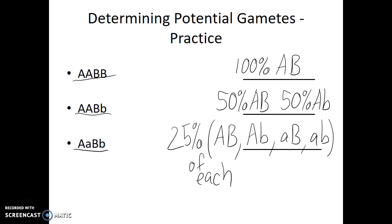We can now use this information to set up a Punnett square. We'll look at examples of Punnett squares for a dihybrid cross in the next video.